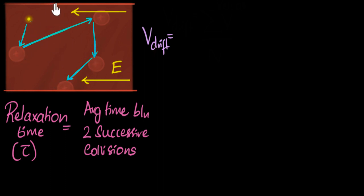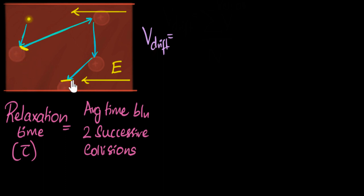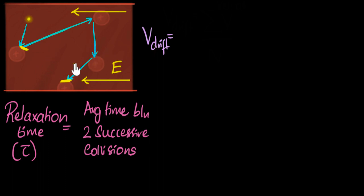We're averaging a single electron over time. So let's say I consider a start time and look at a span covering a million collisions. Drift velocity would then be: calculate velocity at every single point, add them all up, and divide by n.